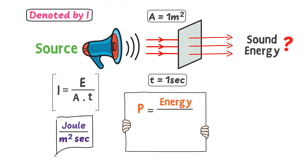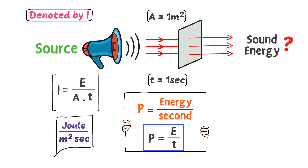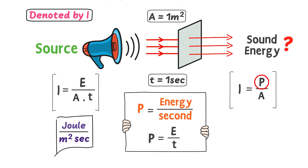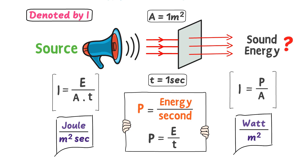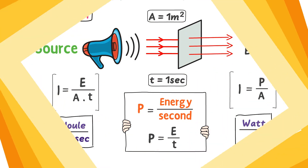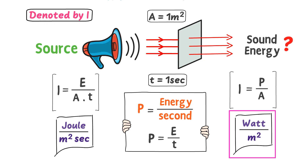We can also write another equation of sound intensity in terms of power. We know that power is energy per second, or P equals E divided by T. Substituting, we get I equals P divided by A. The SI unit of power is watt and the SI unit of area is meter squared, so we get watt per square meter. We have two equations: I equals E divided by A times T, or I equals P divided by A, with SI units of Joule per square meter per second or watt per square meter. Mostly we use watt per square meter for sound intensity.